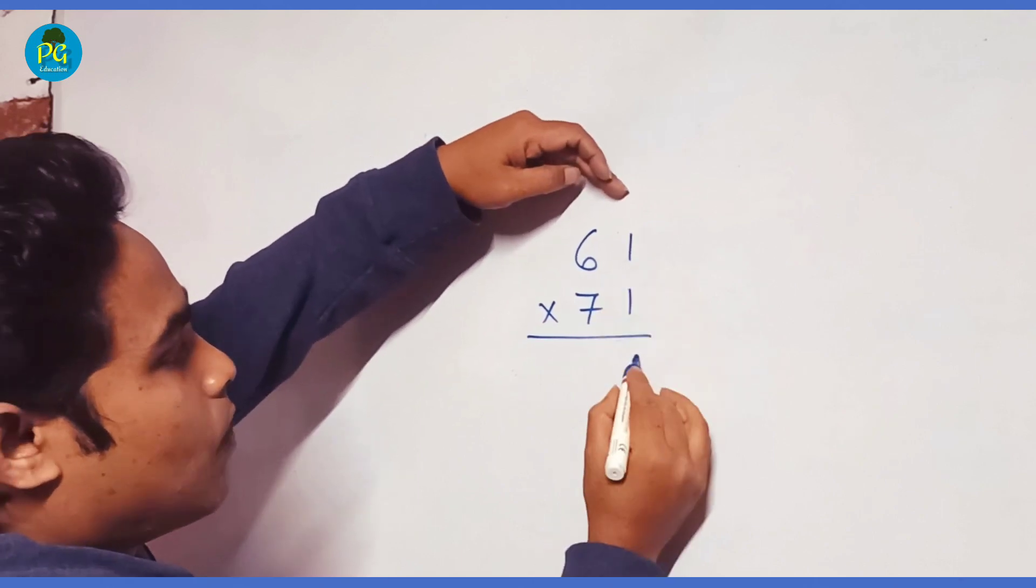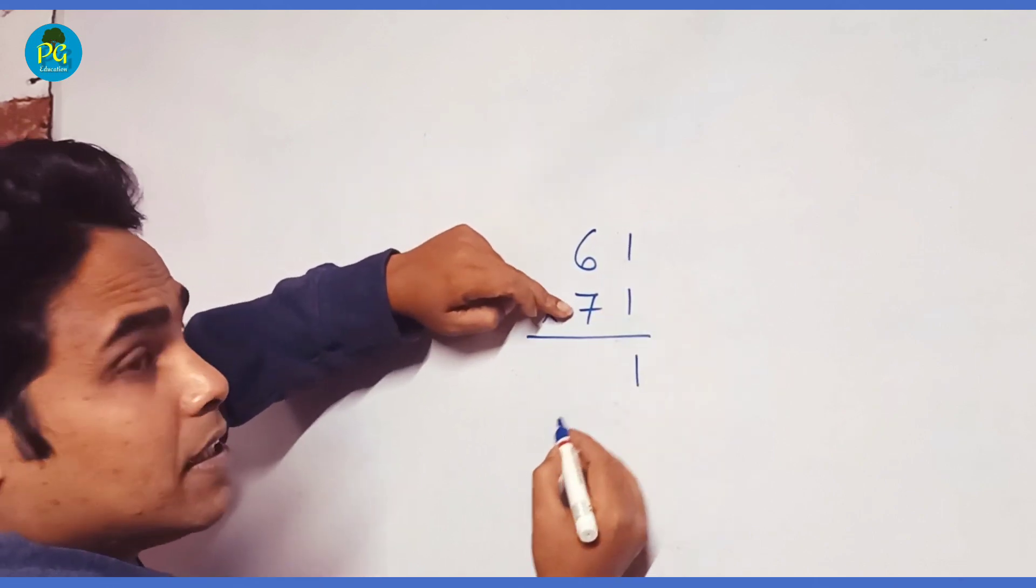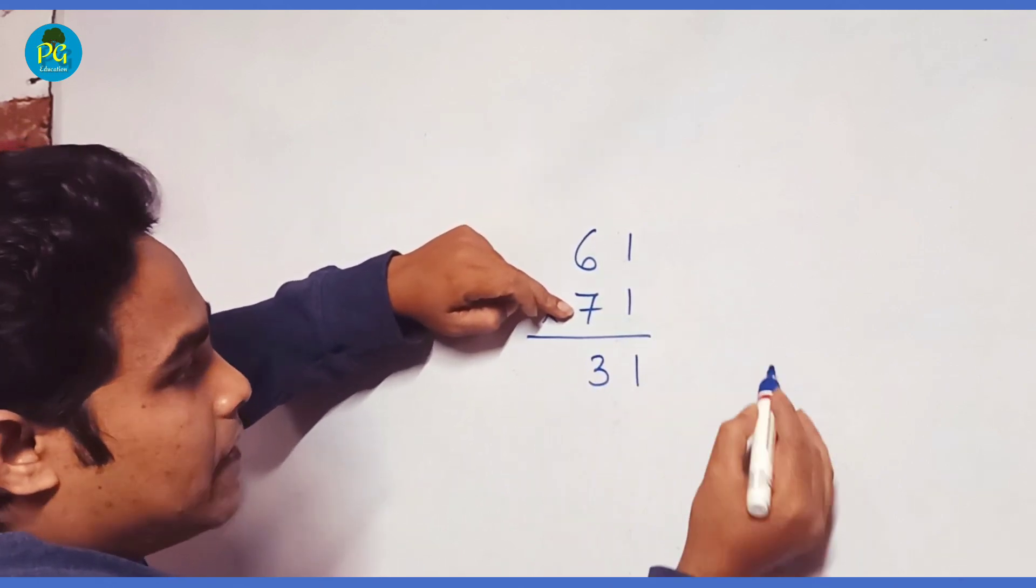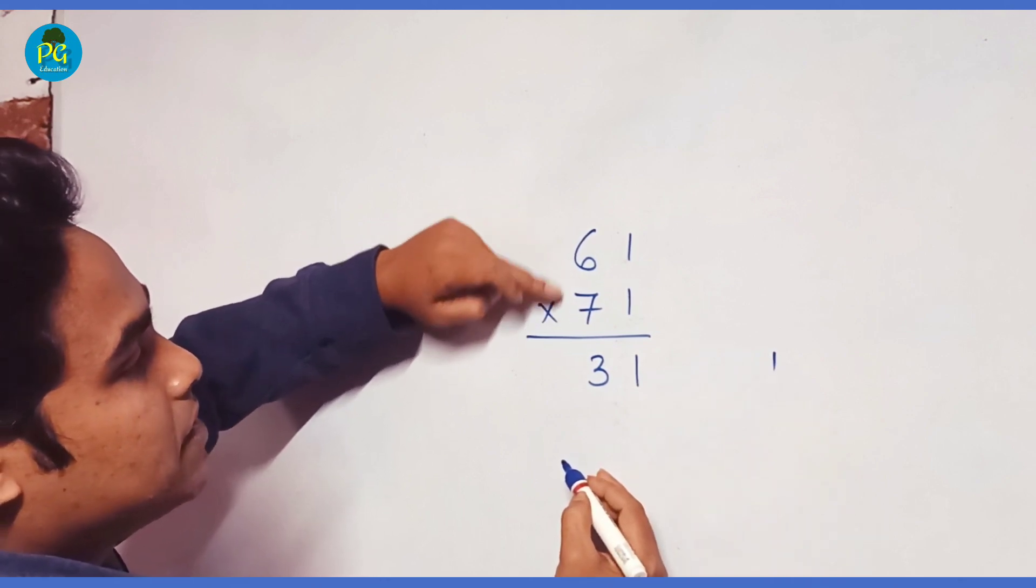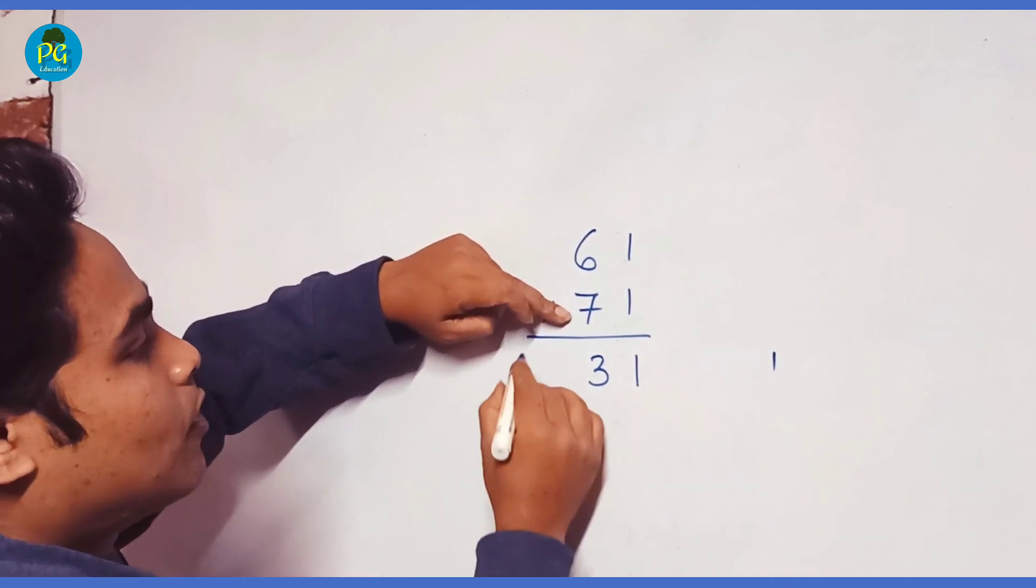So 1, 1 is 1. 6 plus 7, 13. 3, 1 in hand. 6, 7 is 42 plus 1, 43.